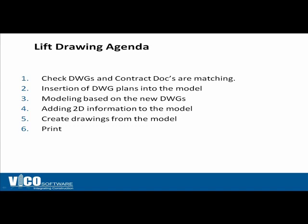If the drawings we produce are a reflection of the information in the model, we need to make sure that we have an accurate model. When I say accurate, I mean coordinated, with all the building parts joining together in the way that we see fit. The model is built directly from the information delivered to us from our design consultants, preferably in DWG format. We need to do our due diligence and make sure the information we're going to be modeling from matches the contract docs — we want to make sure we're modeling the right building.